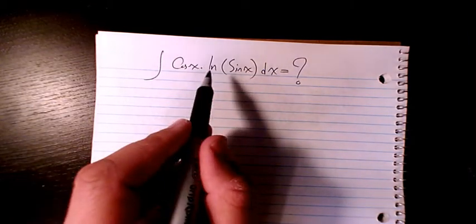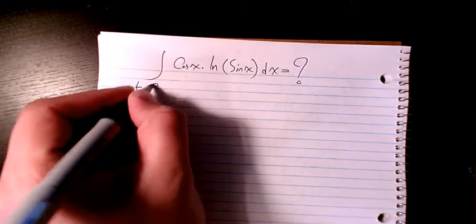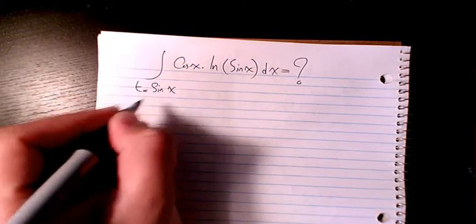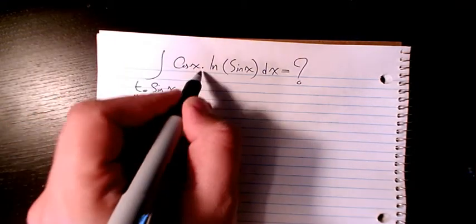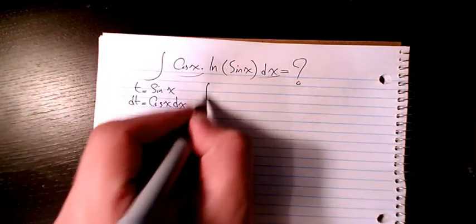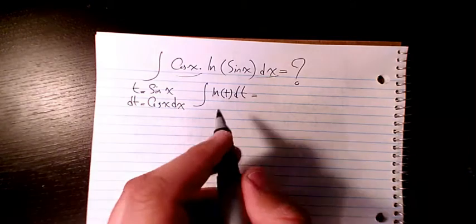So sine x here I consider as t, so t is sine x, so dt is going to be cosine x dx. We have cosine x dx, so it will be ln t dt. Then I will use integration by parts.